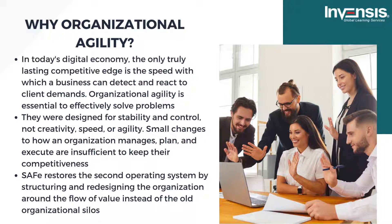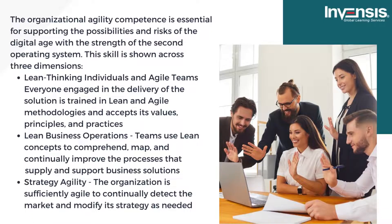This skill is shown across three dimensions. First, lean thinking individuals and agile teams — everyone engaged in solution delivery is trained in lean and agile methodologies and accepts its values, principles, and practices. Second, lean business operations — teams use lean concepts to comprehend, map, and continually improve processes that supply and support business solutions. Third, strategy agility — the organization is sufficiently agile to continually detect the market and modify its strategy as needed.